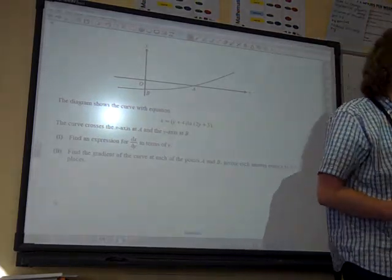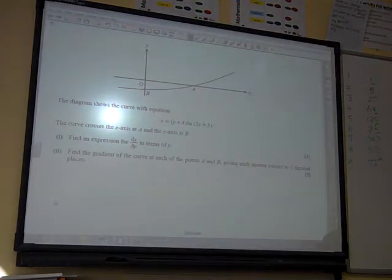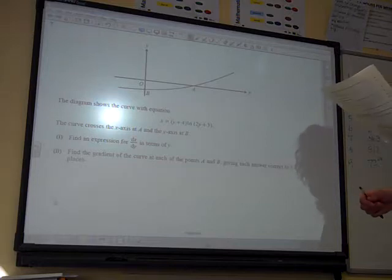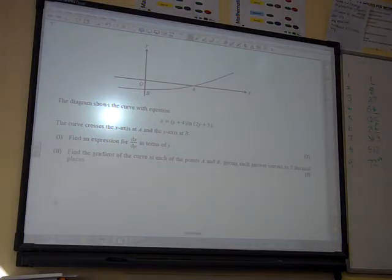Question 7. The diagram shows the curve of the equation x equals y plus 4, natural log of 2y plus 3. The curve crosses the x-axis at A and the y-axis at B. Find the expression for dx by dy in terms of y.